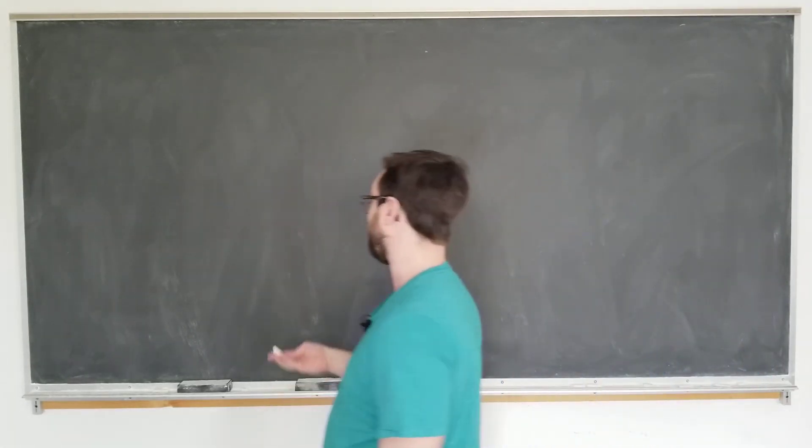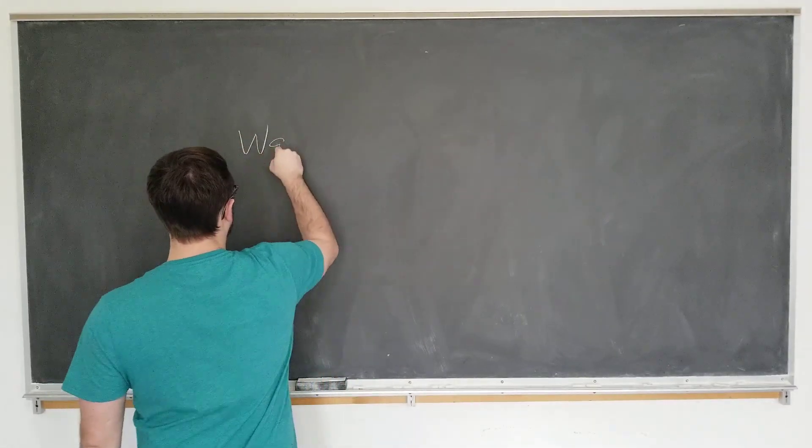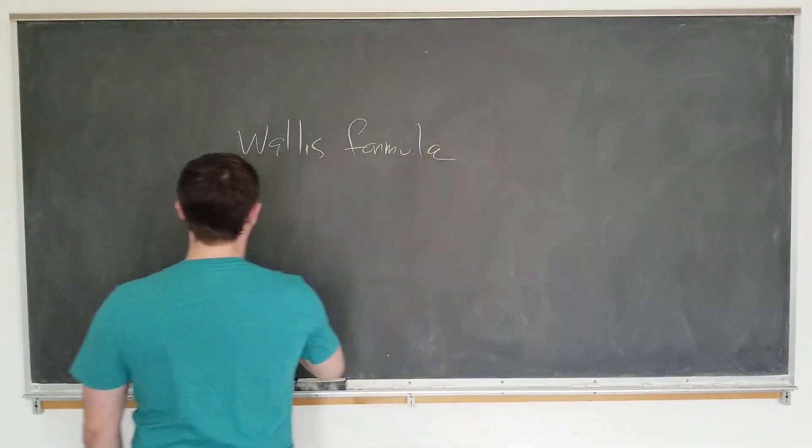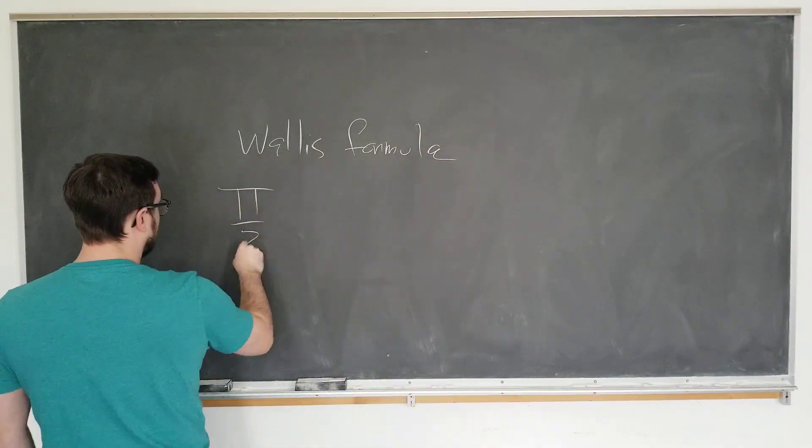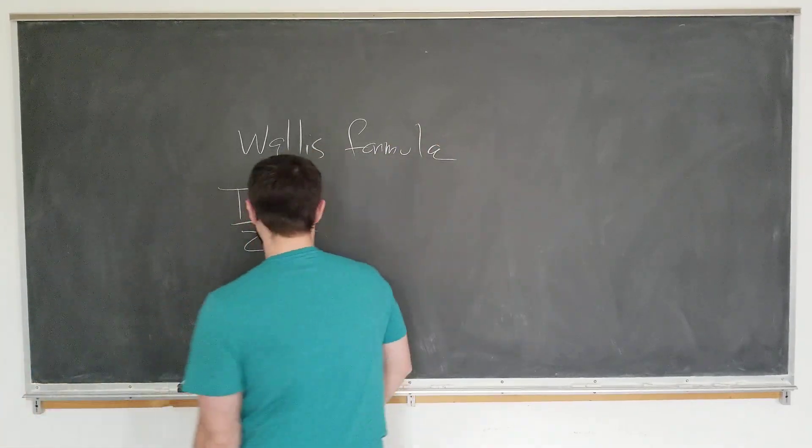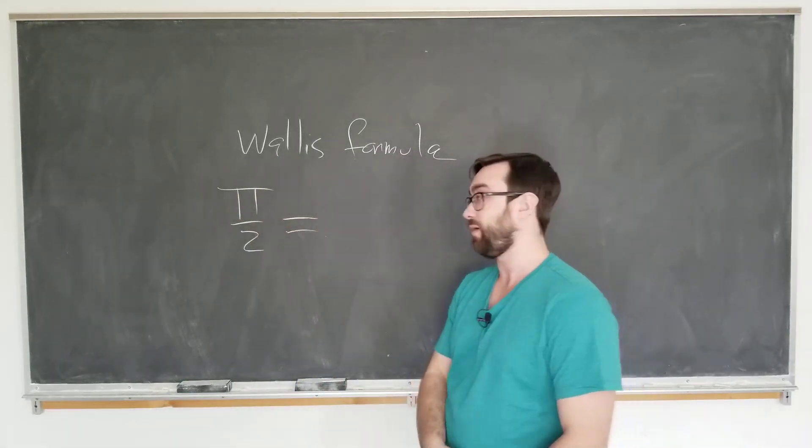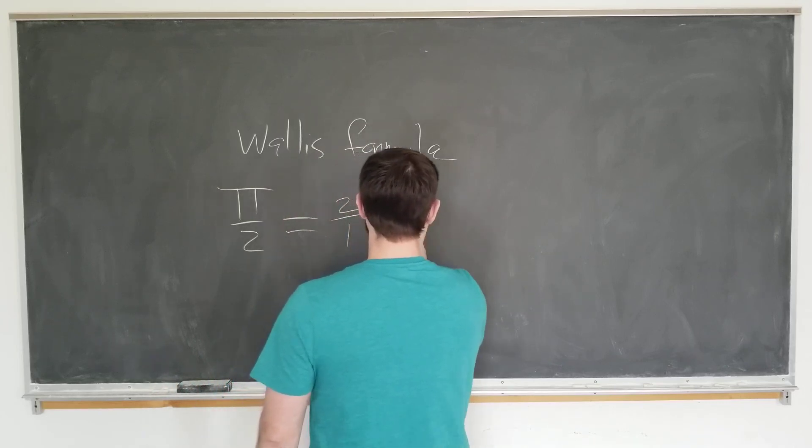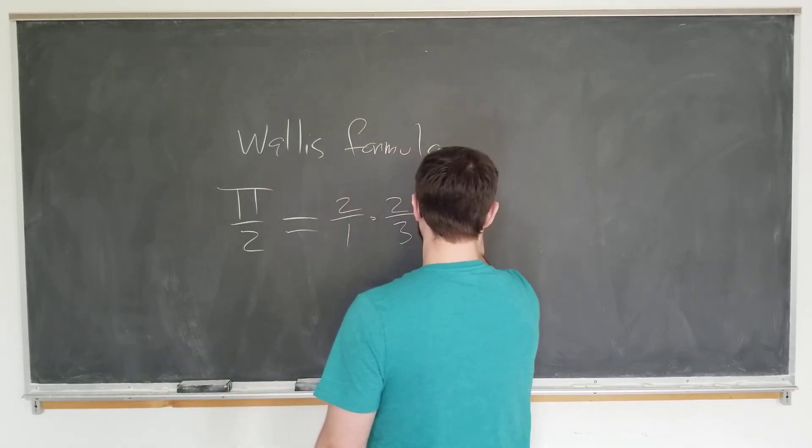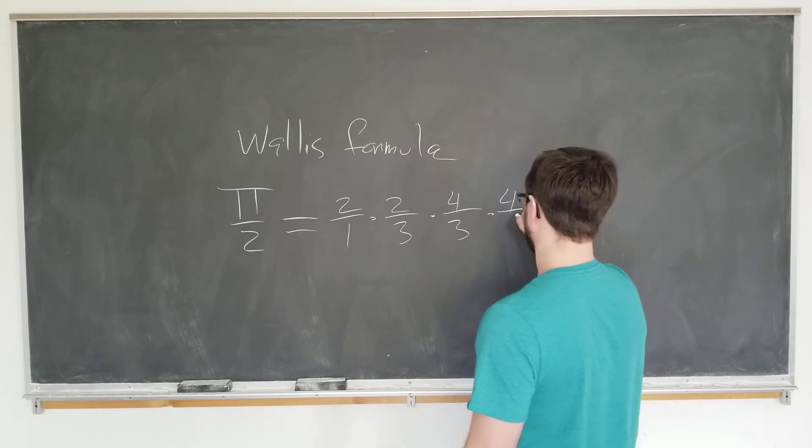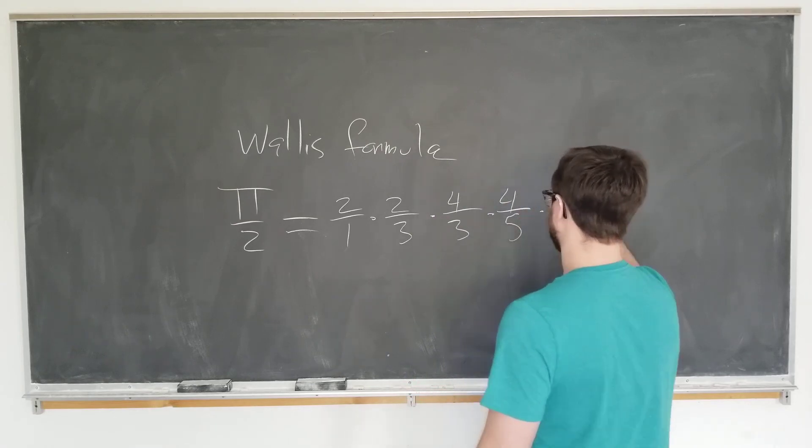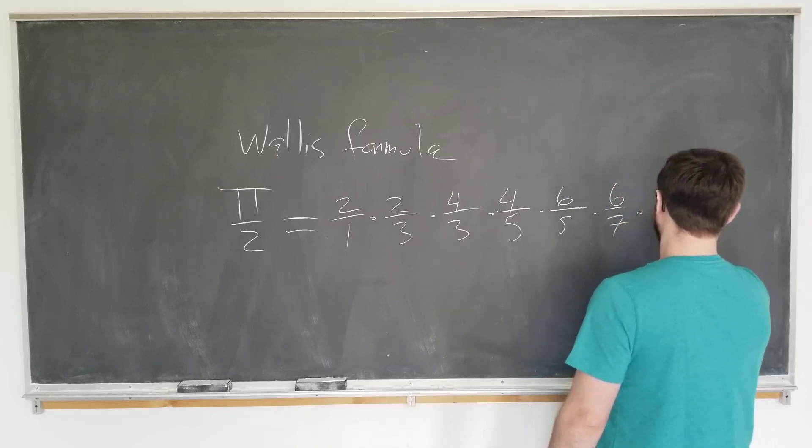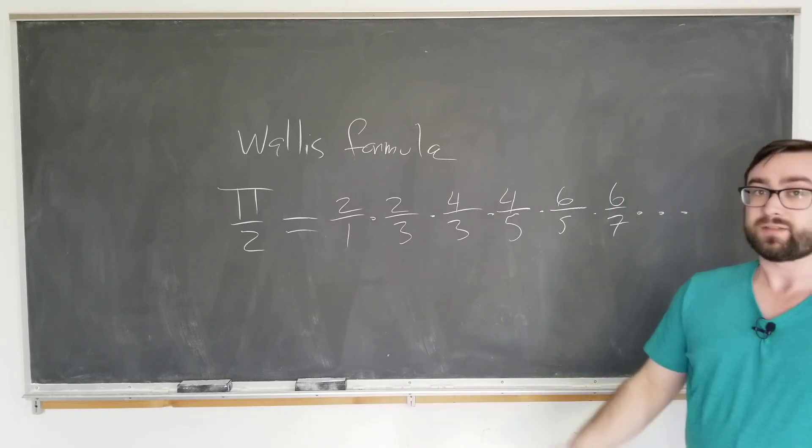What's the Wallace formula for pi? Well, it is actually an infinite product representation of pi over 2. The Wallace product formula states that pi over 2 is actually equal to the product of 2 over 1, times 2 over 3, times 4 over 3, times 4 over 5, times 6 over 5, times 6 over 7, continued on indefinitely.